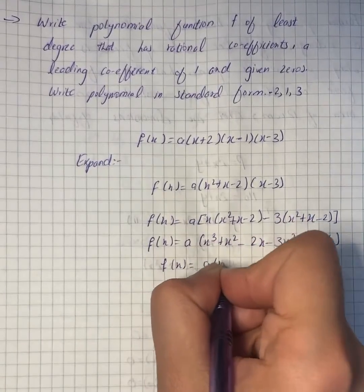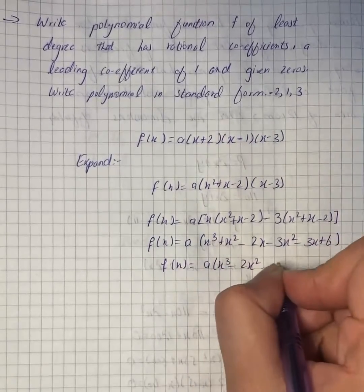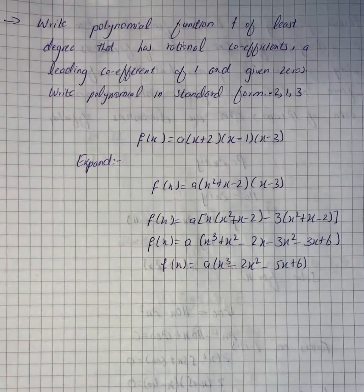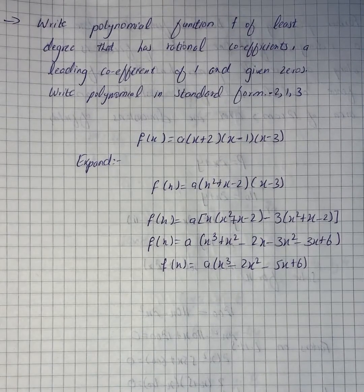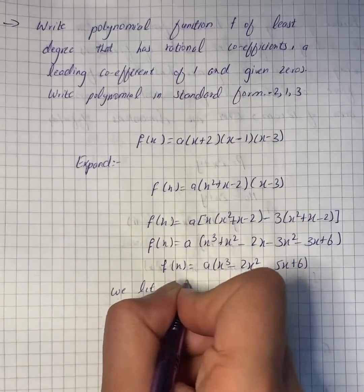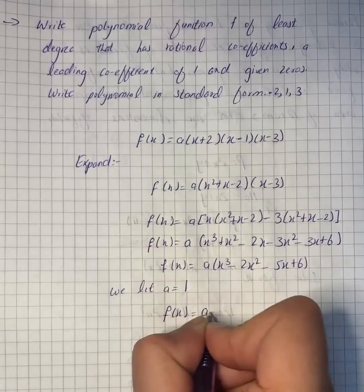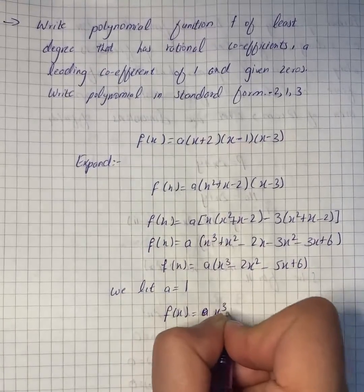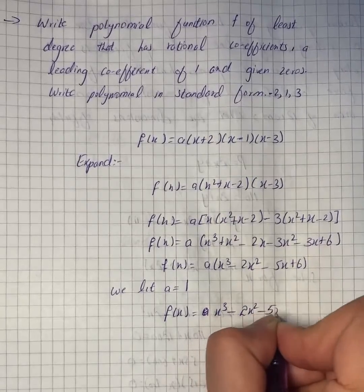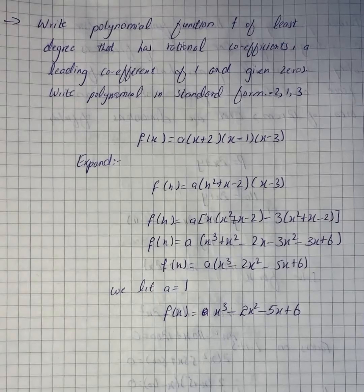Since the leading coefficient is 1, we let a equal 1. So the function becomes f(x) equals x raised to power 3 minus 2x square minus 5x plus 6. Here we have our desired polynomial function.